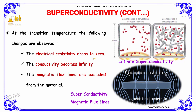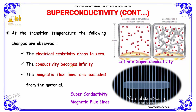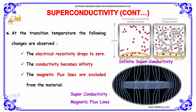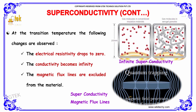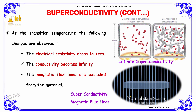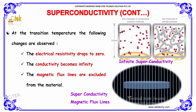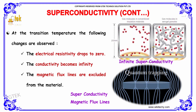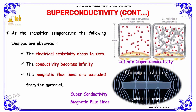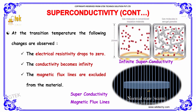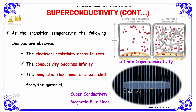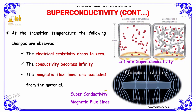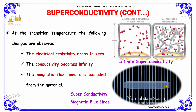At the transition temperature, the following changes are observed: the electrical resistivity drops to zero, the conductivity becomes infinity, and the magnetic flux lines are excluded from the material. Here I'm showing the superconductivity stages — the normal stage, the cooling stage, and the stage where magnetic flux becomes excluded from the material.